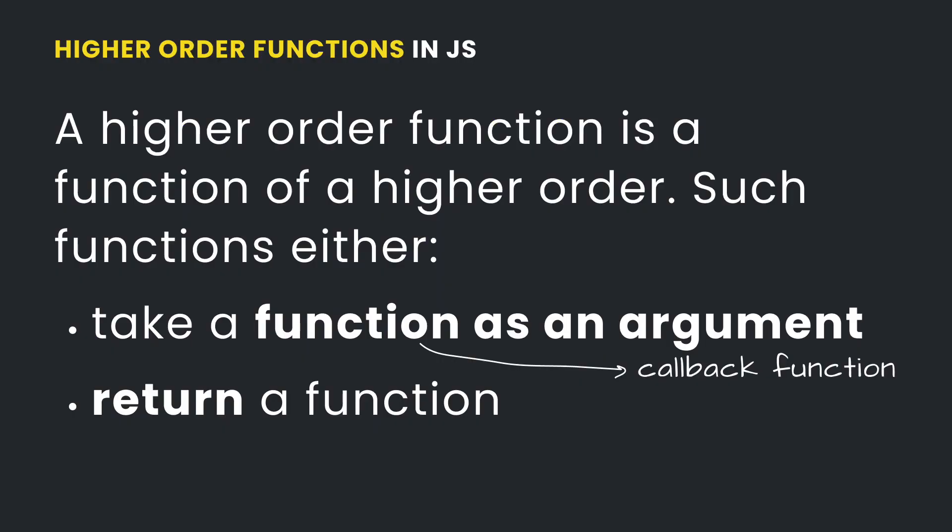Higher-order functions are functions which are of a higher order, and higher order here can mean either of two things. Number one, a function that takes another function as an argument — this argument is referred to as a callback function. And the second thing is a function that returns another function. So any function that meets either the first condition or the second condition or both conditions is referred to as a higher-order function in JavaScript.